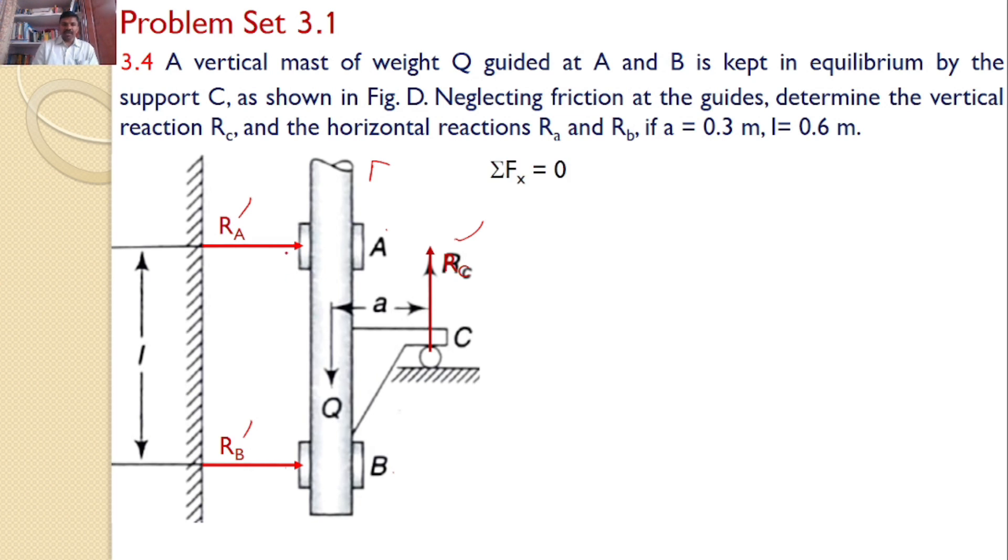Now, to satisfy the equilibrium, the net force along x-axis must be equal to 0. There are only two forces acting along x-axis, hence Ra plus Rb equals 0. And sigma Fy equals 0. There are two forces acting along y-axis, one is Q and another is Rc, hence Rc equals Q. So this is one of the answers.